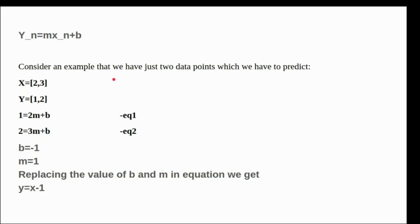In linear regression we have a very simple equation, also known as a straight line equation: y is equal to mx plus b, or we can write it as yn equals mxn plus b, where x is our set of inputs, yn is our corresponding set of outputs, and we try to find the values of m and b to get the correct output when we input xn.